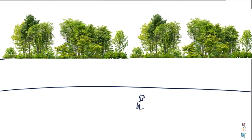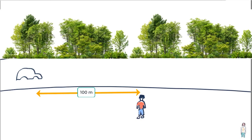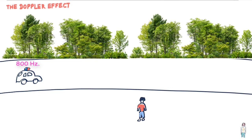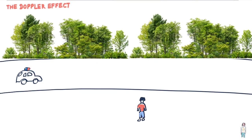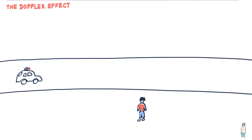Say you are standing on a footpath and a police car is parked 100 meters away from you, and the siren of the car is emitting sound at 800 hertz. It would be no surprise that the frequency of the sound you hear would also be 800 hertz. But if the car starts moving towards you and then goes past you, this is what you will hear.